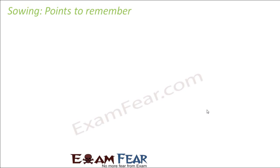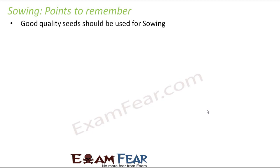Some of the points which you need to remember while sowing, that means while scattering seeds, there are some very important points to be remembered. First is: good quality seeds should be used for sowing. Because as I said, the type of seeds which you provide is the type of plant that you will get out of it.